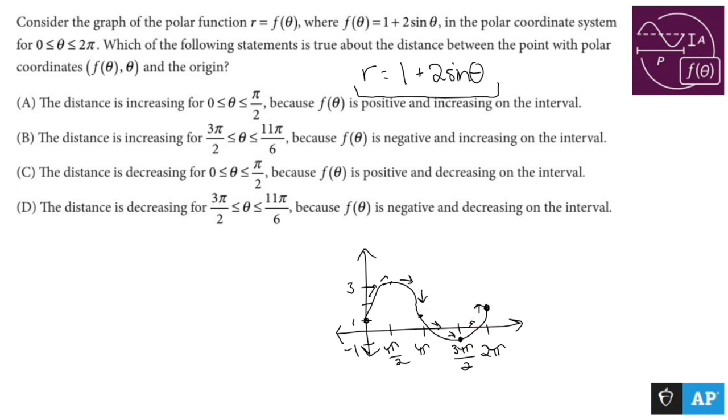The distance is increasing for 0 is less than or equal to theta, which is also less than or equal to π/2, because f of theta is positive and increasing on the interval. Well, I have news. F of theta is positive, but it's not increasing. Oh, it is increasing.